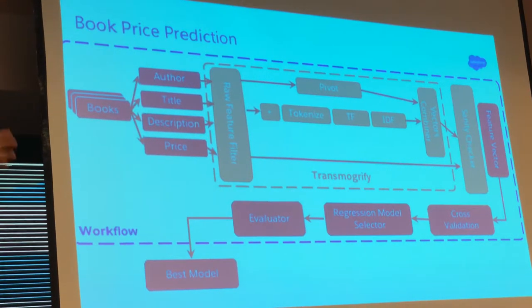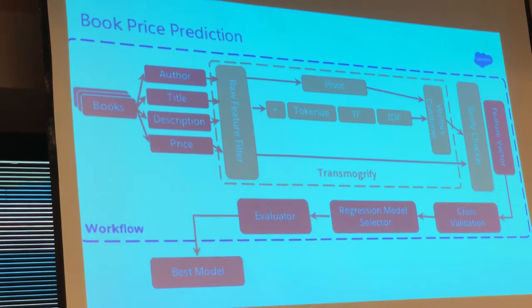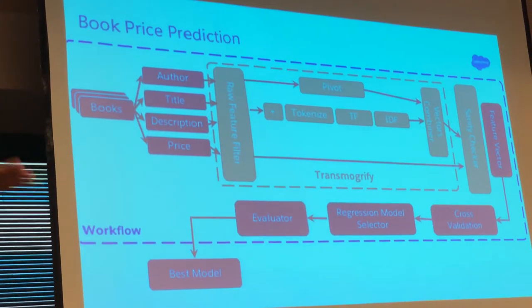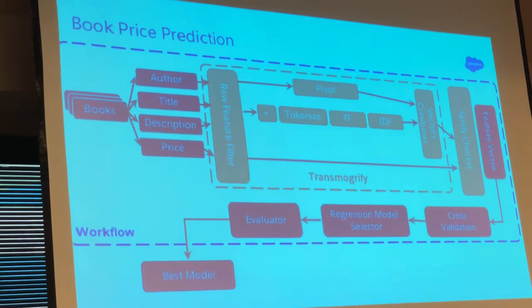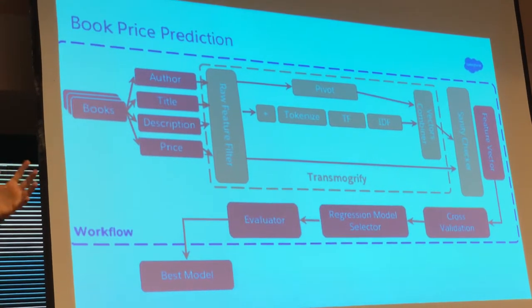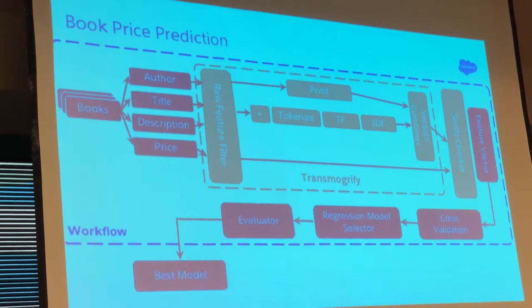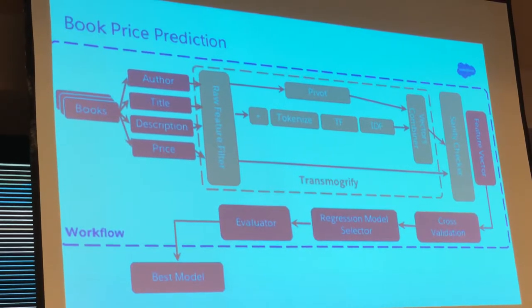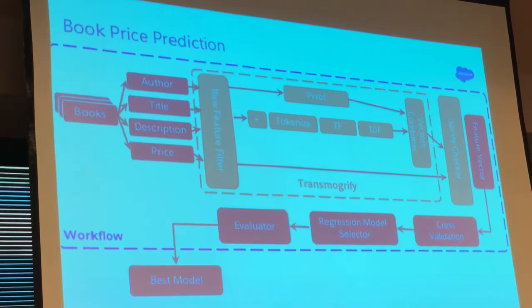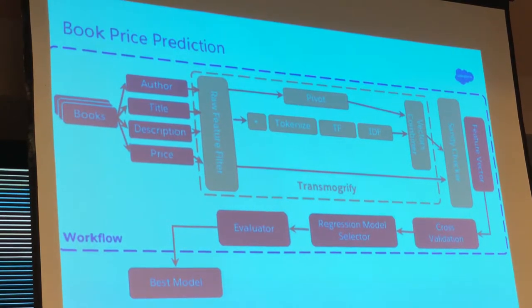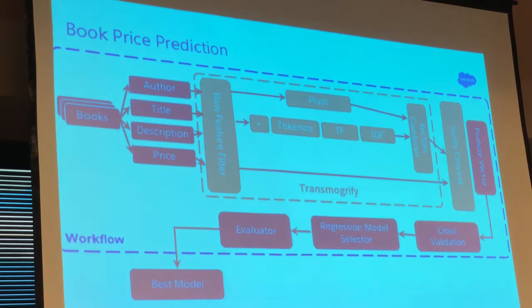The feature is being materialized as a DataFrame. Then we apply a raw feature filter that computes distributions of all the values in the raw data, and then we apply all the stages specified by the user. We build one large multidimensional vector that is consumed by the algorithms. Then we immediately apply sanity checking — we see which portions of this vector have good distributions. If they don't, maybe they're leakers — they leak some of the predictive power of our models — and we remove them. Then we apply cross-validation and model selection, evaluate the results, and pick up the best model.